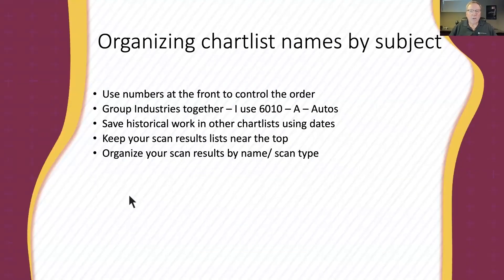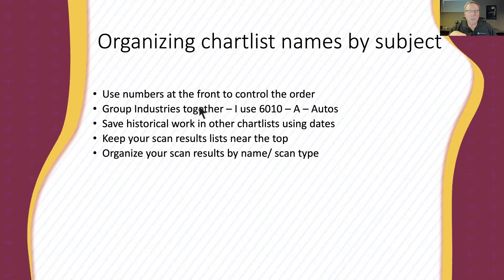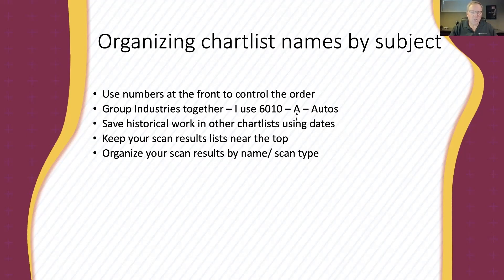When you have an industry group and add a new one, you don't want to renumber everything. Use numbers at the front to control the order. I group industries together using 6010 hyphen, then the first letter, then another hyphen, then the name. If I had numbered sequentially 6010, 6011, 6012, 6013 and then wanted to add airlines at the top, I'd have to change all the numbers. By using the hyphen-letter system, I can keep all the letter A's together regardless of what I name them after.